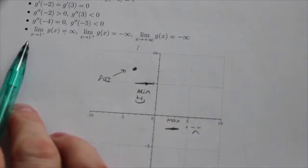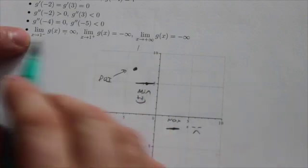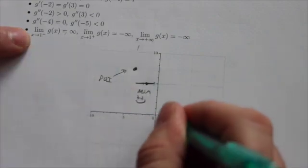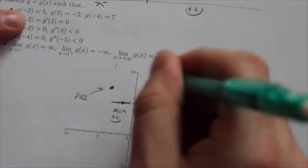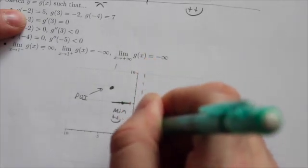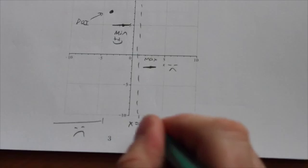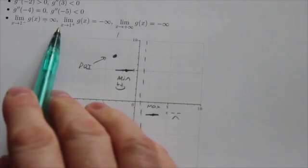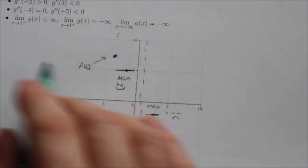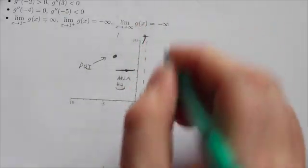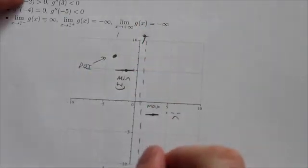Now the limit as x approaches 1 from the negative side, so 1, goes to infinity. So that is setting up x equals 1 to be a vertical asymptote. And then as x approaches from the left, we're going up to positive infinity here, and then on the other side here it looks like we're going down to negative infinity.